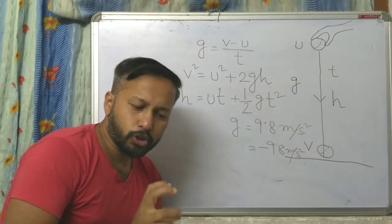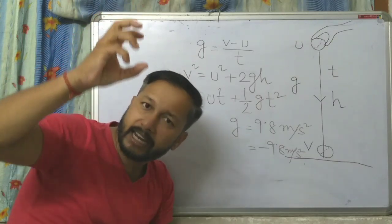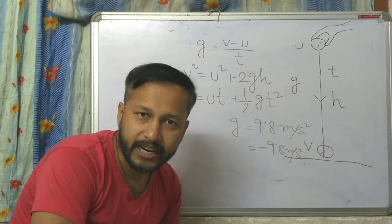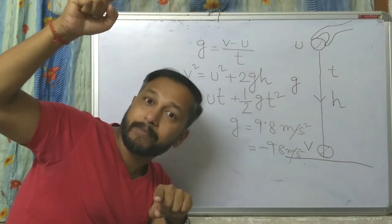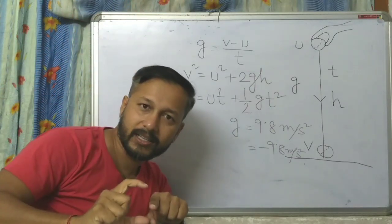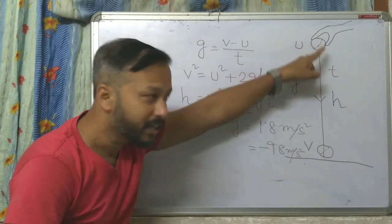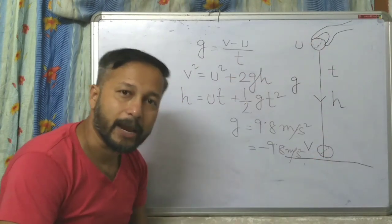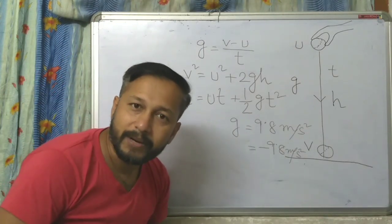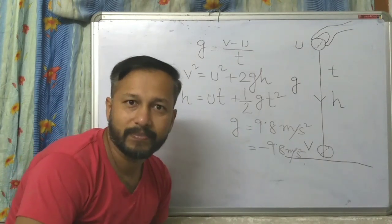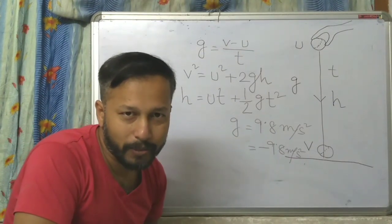Next information: if you are throwing a ball from here and it is going up and then coming back down, the time taken from here to go up there and the time taken to come back down are equal. For example, if it takes 5 seconds to go up, then it takes 5 seconds to come back down. The time taken by the ball to go up and the time taken to come down will be the same. So if you understood this, we are ready to start our numericals.